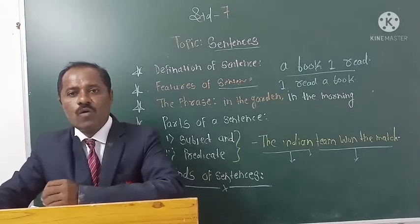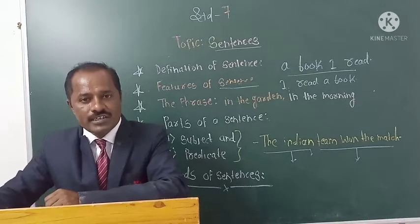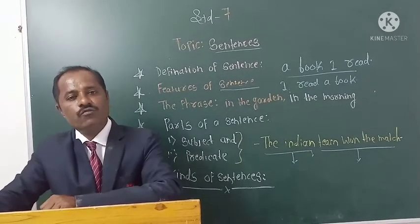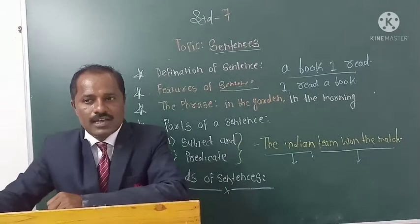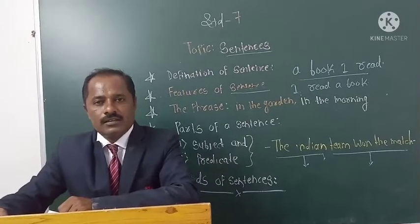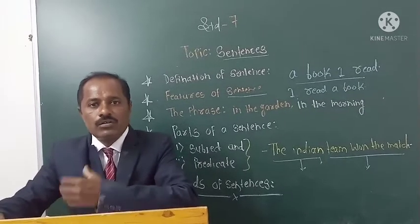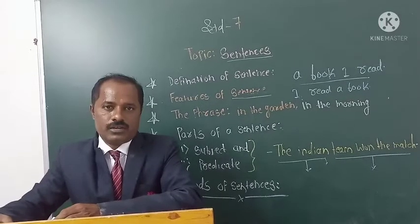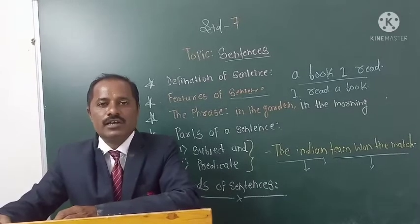After that, we should know what are the main features of a sentence. The first feature is: a sentence is a group of words which makes complete sense by itself. A sentence always begins with a capital letter. A sentence always ends with a full stop, exclamation mark, or question mark. A sentence is made up of two parts, that is subject and predicate.